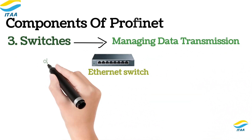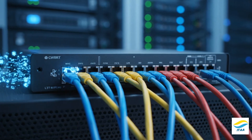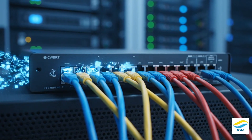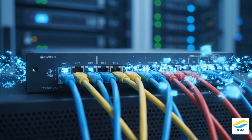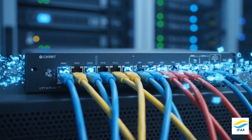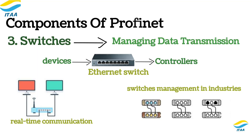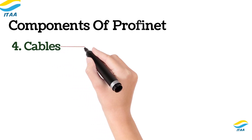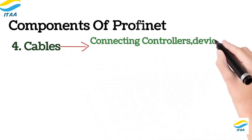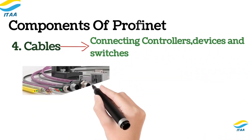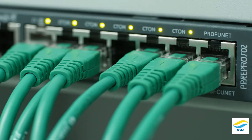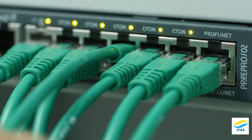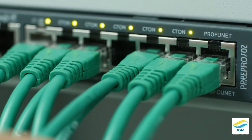Switches are communication hubs that route data between devices and controllers. Managed switches also prioritize important real-time data to avoid delays. Ethernet cables are the physical backbone of PROFINET, connecting controllers, switches, and devices. Industrial Ethernet cables are designed to handle high speeds, extreme temperatures, and electrical noise.